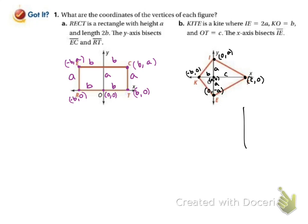Notice that this placement would be a lot different — and a lot easier — than if we drew the kite like this. In this off-center version, to get all the way over to this vertex we'd have (b + c, 0), and to get to the top vertex it would be (b, a) — we'd have to go over b and up a. So different placements of the shape on the graph are going to change whether it's harder or easier to work with.